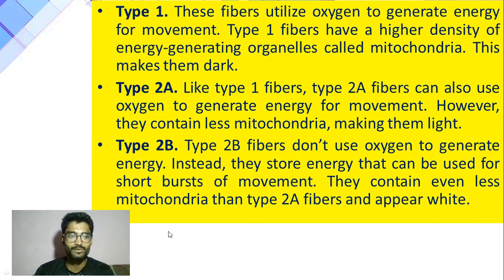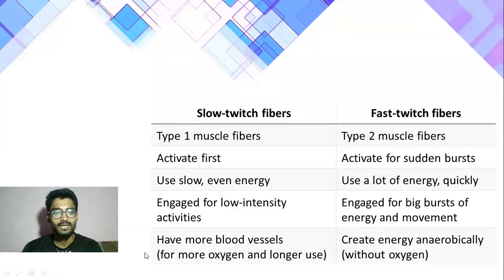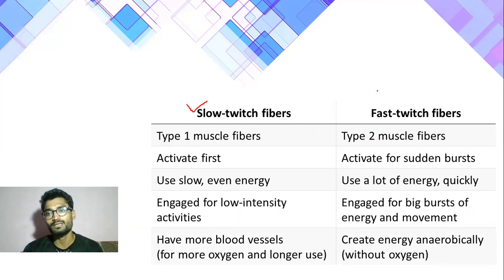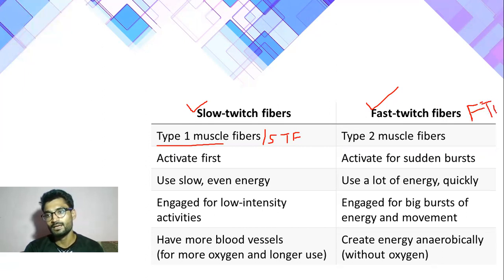जब आपकी highest activity होती है तब इनका color white होता है, इसीलिए इनको white muscle fiber भी बोलते हैं। Comparative study में: slow twitch muscle fiber को Type 1A या SPF (Slow twitch fiber) बोलते हैं। Fast twitch को FTF (Fast Twitch Fiber) बोलते हैं — अगर sort में लिखा मिले तो भी आप clear हो जाएं।